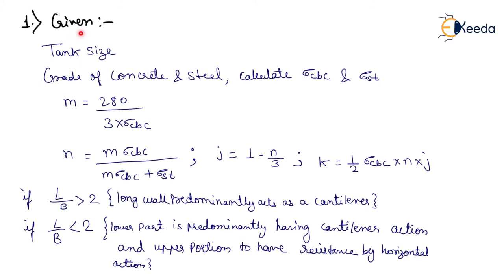Step 1: Given tank size, grade of concrete and steel. Calculate sigma CBC and sigma ST. Modular ratio M equals 280 upon 3 sigma CBC. N equals M sigma CBC upon (M sigma CBC plus sigma ST). J equals 1 minus N by 3. K equals half sigma CBC into J into N.